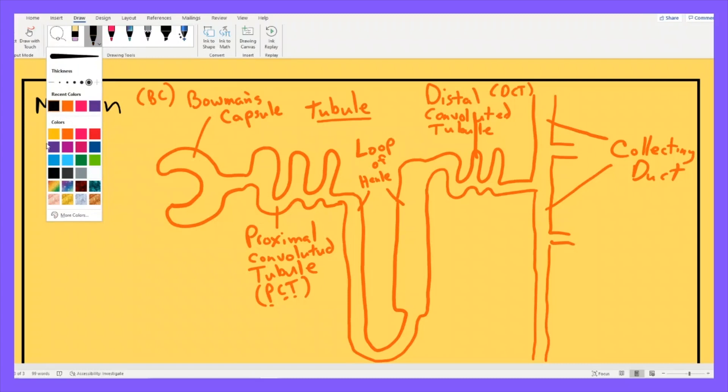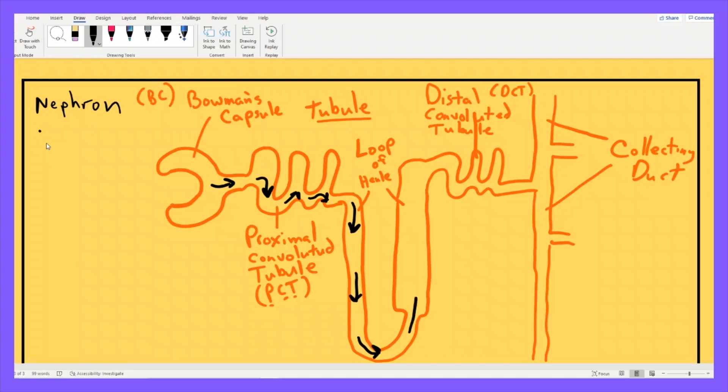And you will notice that someone, namely me, made arrows in here that show you the way fluid moves through this tubule. So it worms its way through the tubule in this picture from left to right. Then it goes into the collecting duct, joining fluid from other nephrons.